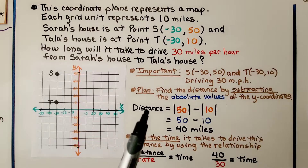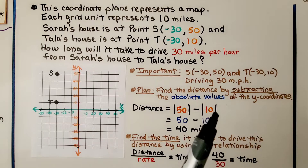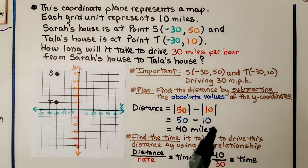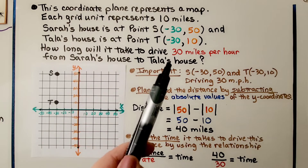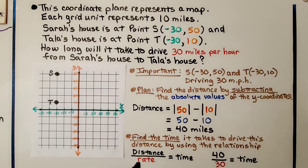The distance is equal to the absolute value of 50 minus the absolute value of 10. That means we have 50 minus 10, which is a 40-mile difference. Now, it wants to know how long it will take to make this drive at 30 miles per hour, so we're going to find the time using the relationship that distance divided by rate equals time.